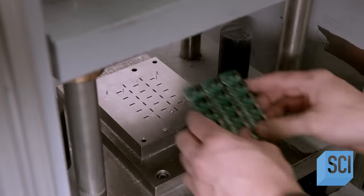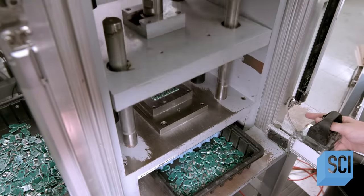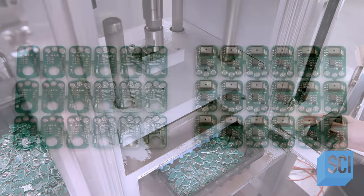Then the boards move to a pneumatic punch. It separates the 18 sensor circuit boards by cutting the tabs that hold them together.